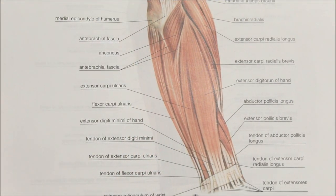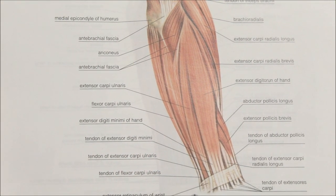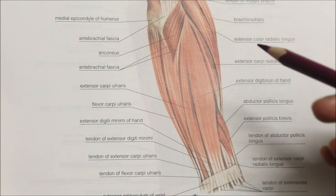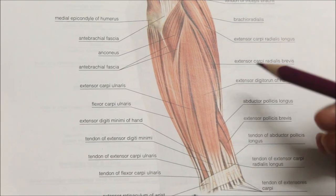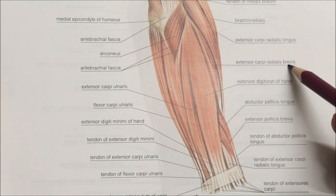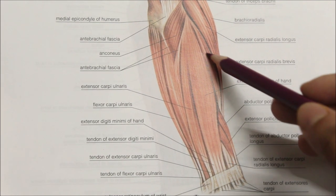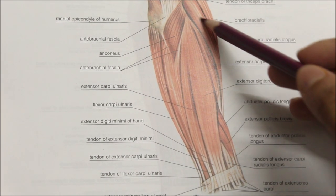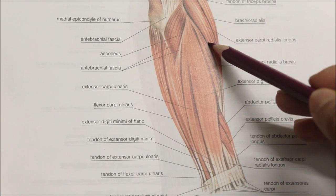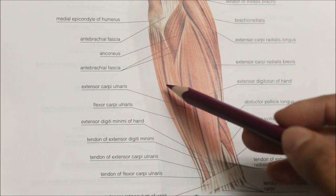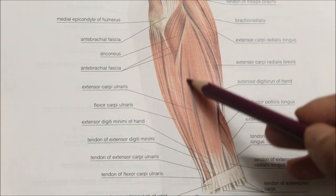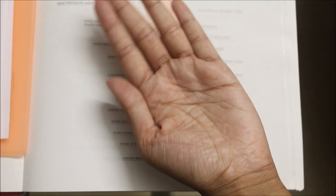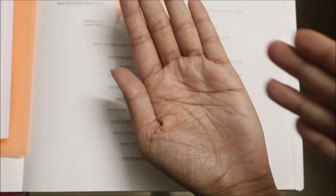The extension movement takes place mainly at the wrist joint. The main extensors are the extensor carpi radialis brevis, the extensor carpi radialis longus and the extensor carpi ulnaris.